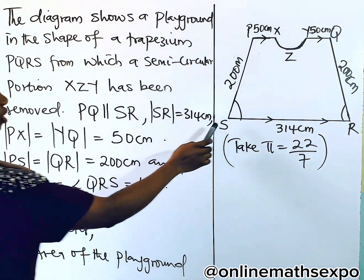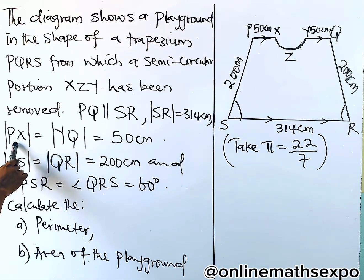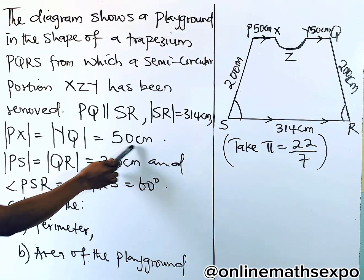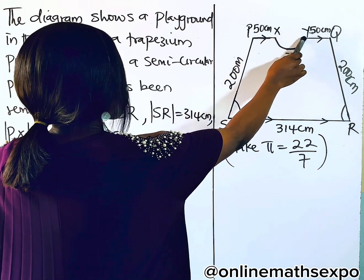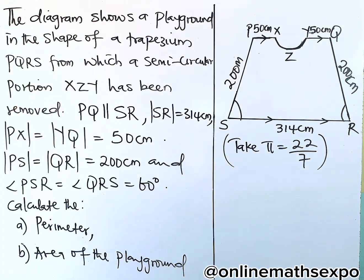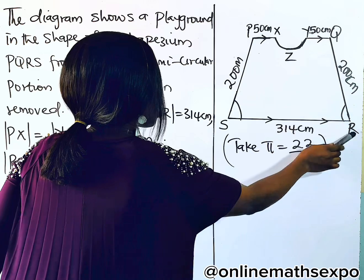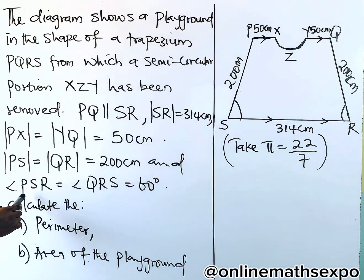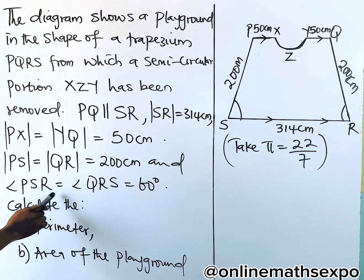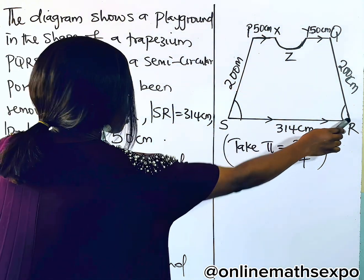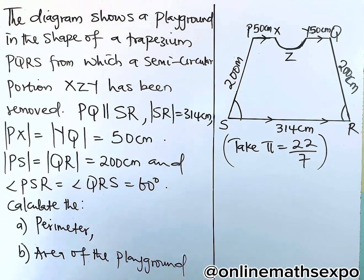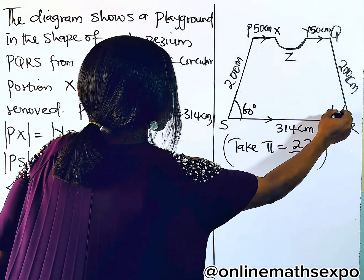We are told SR, this line, is 314. PS is equal to YQ, and it's 50. You see that the two lengths are the same. And we are told PS is equal to QR, which is 200. You see that those lengths are the same. We are also told angle PSR and the angle formed at R — these two angles are the same, and it's given as 60 degrees. So here is 60, and here is also 60.